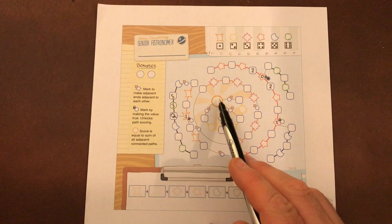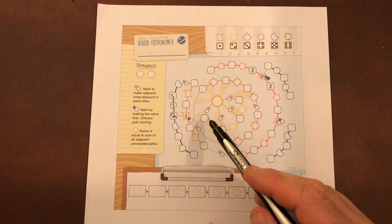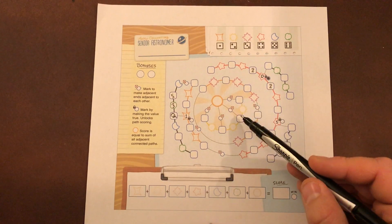The last one is this sun in the center here. The score is equal to the sum of all adjacent connected paths. So this one and this one.